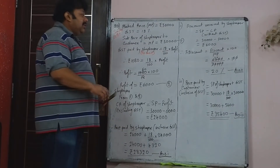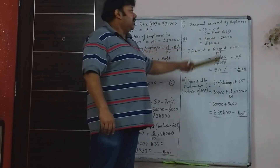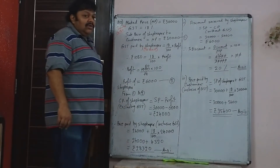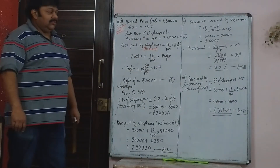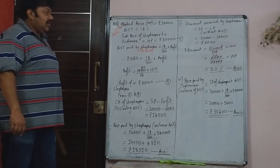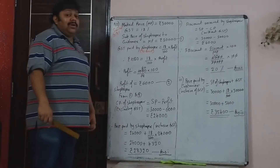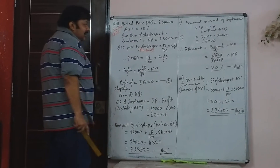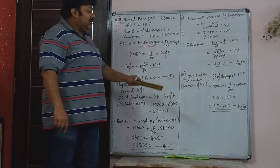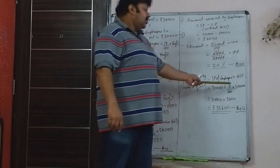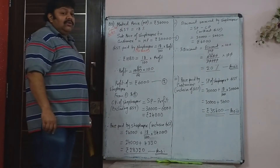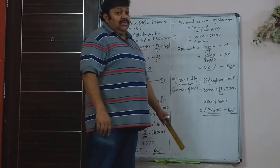The discount the shopkeeper got equals the profit — that is SP minus CP. He sold it at Rs. 30,000 and bought it at Rs. 24,000, so he got a discount of Rs. 6,000 on the mark price. Percentage discount: Rs. 6,000 on Rs. 30,000 is 20%. The price paid by the customer without GST equals the mark price Rs. 30,000, plus 18% GST which is Rs. 5,400, so total Rs. 35,400 is the price paid by the customer including GST.